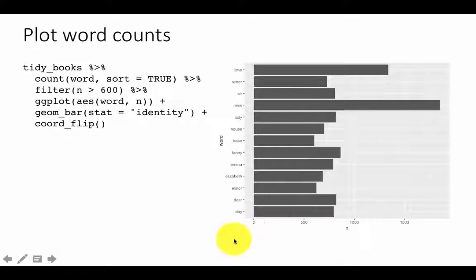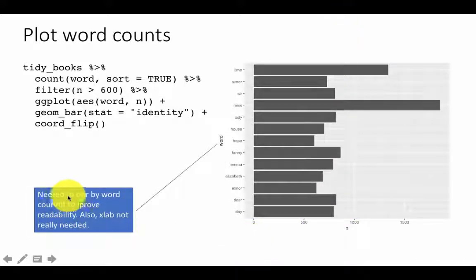But there are still some aesthetic issues with this chart. Typically, when you have a bar chart like this, it's easier to read it if you arrange it in some nice order, either from lowest to highest or highest to lowest. This one is not arranged in any particular order. So that's not very useful. So we need to order by word count to improve the readability. Also, this is the x-axis label. Although it looks like the y-axis label, that's because we flipped the coordinates. So there's no point in saying word. It's pretty obvious that these are all words. There's no need to add this redundant thing. So we can get rid of this x-axis label. So we need to make both of these changes to produce a better-looking plot.